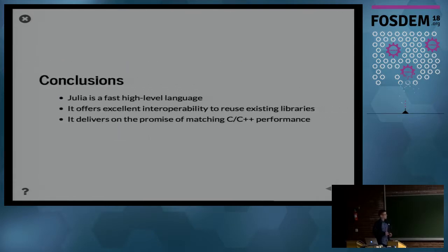So that brings me to the conclusions. Julia is a fast high-level language, as we have seen, and we can interoperate with existing work which may be very extensive, such as is the case of the Trilinos library. It really delivers on the performance of matching the C, C++ performance.